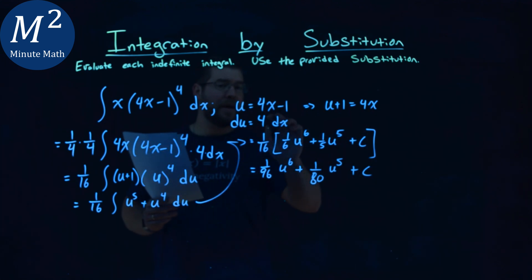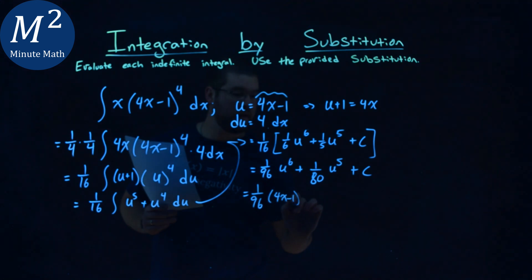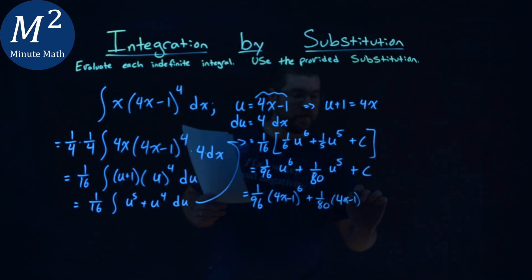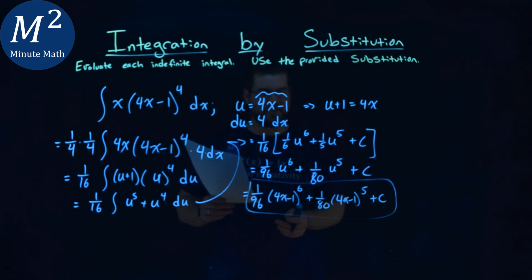Now, we can simplify and plug our u's back in, this one right here, and put it back in for u, and we'll be done. 1 over 96 times a u value, 4x minus 1 to the 6th power, plus 1 over 80, u value of 4x minus 1 to the 5th power, plus c. And that is, after all that, our final answer.